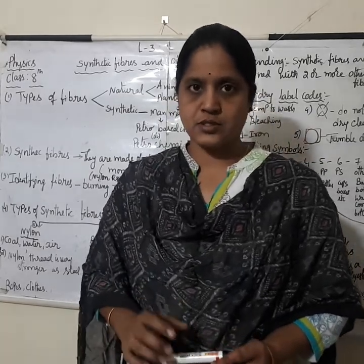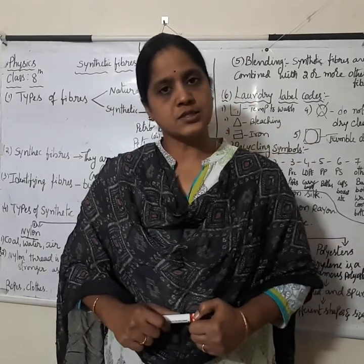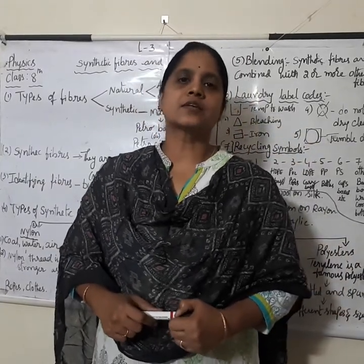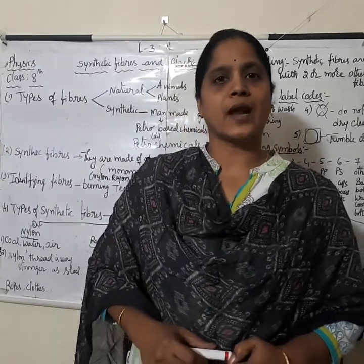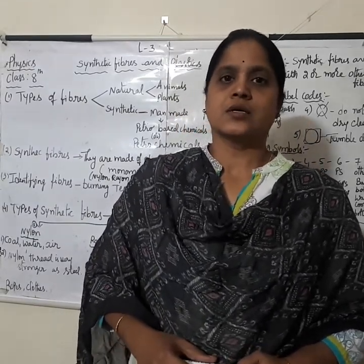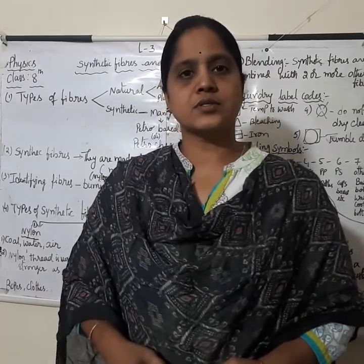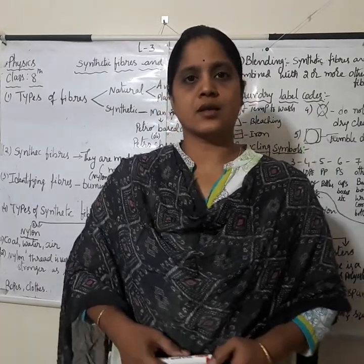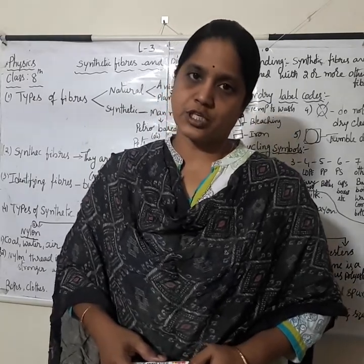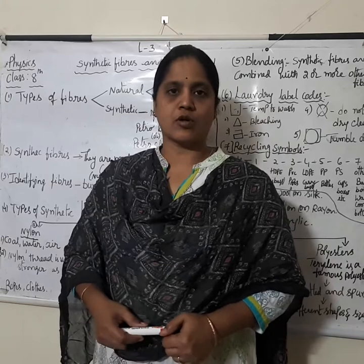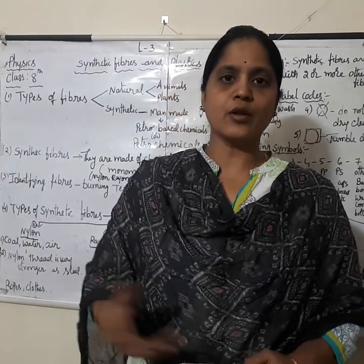In this lesson we discuss fibers. There are two types of fibers: natural fibers and synthetic fibers. Natural fibers can be obtained from two ways — either plants or animals. Examples of natural fibers are pure cotton, pure silk, and pure woolen. Woolen we get from sheep, cotton from cotton plants, and silk from silkworms.